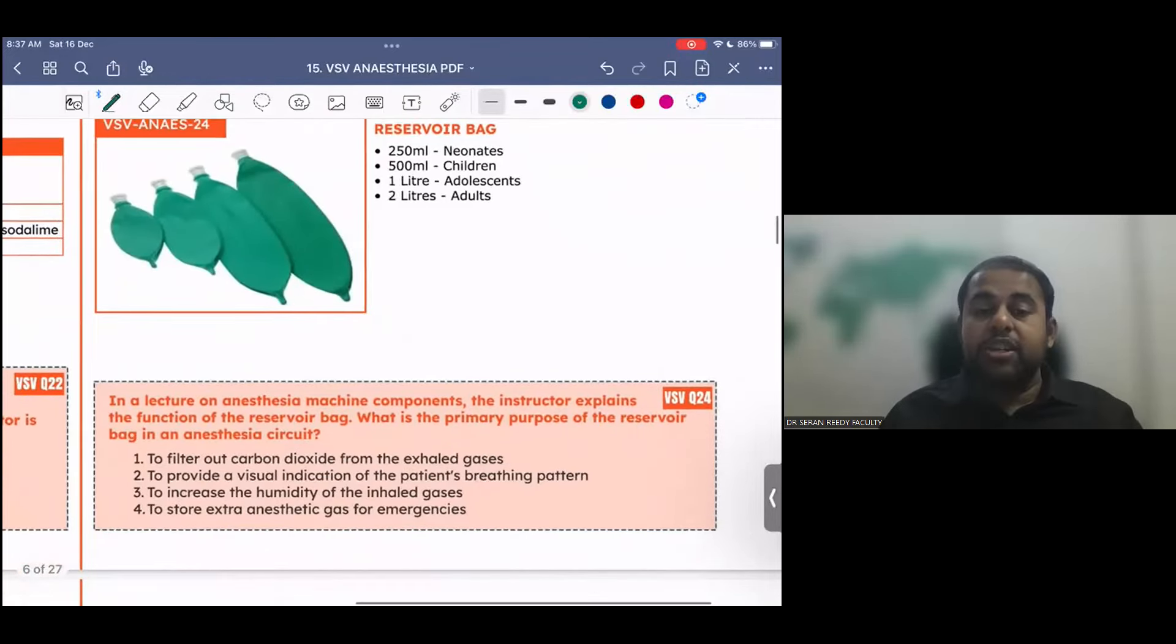In a lecture on anesthesia machine components, the instructor explains the function of the reservoir bag. What is the primary purpose of this reservoir bag in the entire anesthesia circuit? To filter out the carbon dioxide from the exhaled gases, to provide a visual indication of the patient's breathing pattern, to increase the humidity of the inhaled gases, to store extra anesthetic gas for emergencies. Very good. To provide a visual indication of the patient's breathing pattern is the correct answer. To filter out carbon dioxide from exhaled gases, we use soda lime. To increase the humidity, we use closed circuits.